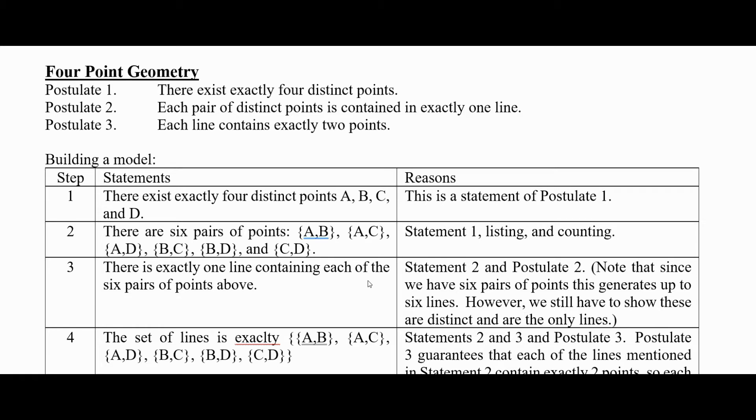There are six pairs of points: A, B; the set containing A, C; the set containing A, D; set containing B, C; the set containing B, D; and the set containing C and D. This is just listing and counting.